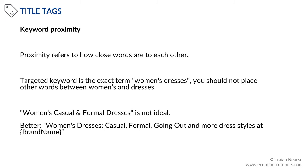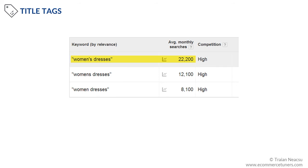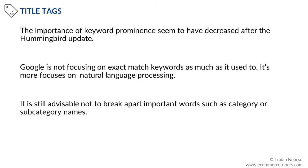Keyword proximity. Proximity refers to how close words are to each other. If your targeted keyword is women's dresses, you should not place other words between women's and dresses. For example, the title 'women's casual and formal dresses' is not ideal. Instead, it should be 'women's dresses, casual, formal, going out, and more styles at your brand name.' When deciding on category names, do some basic search volume research — for instance, women's dresses may have significantly more search volume than an alternative phrasing. The importance of keyword prominence seems to have decreased after the Hummingbird update, as Google is not focusing on exact match keywords as much as it used to. However, it is still advisable not to break apart important words such as category or subcategory names.